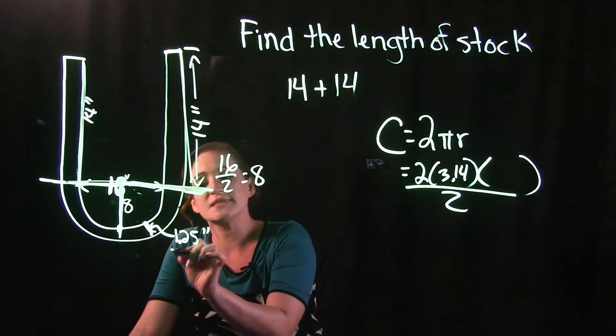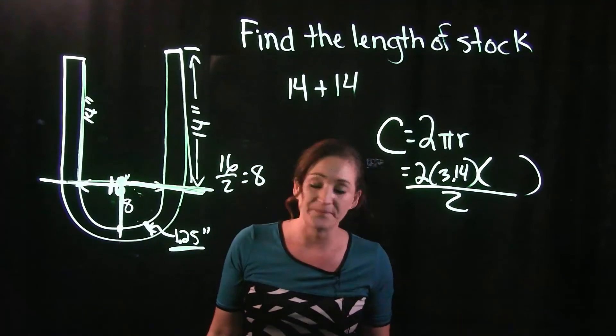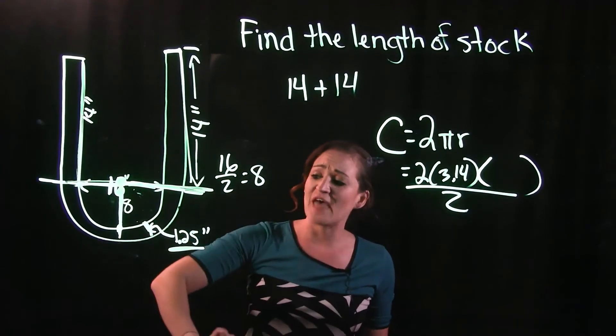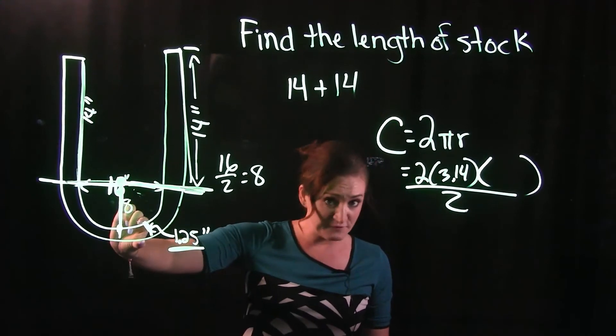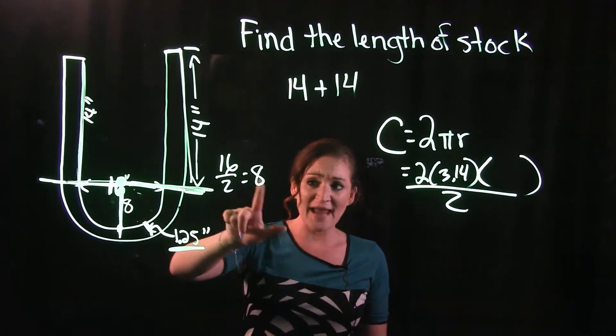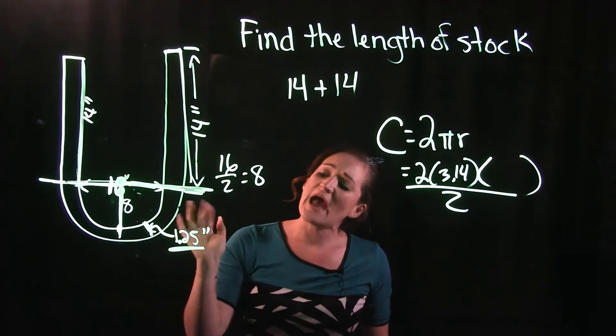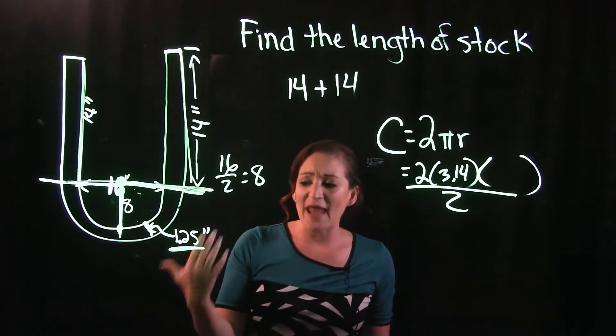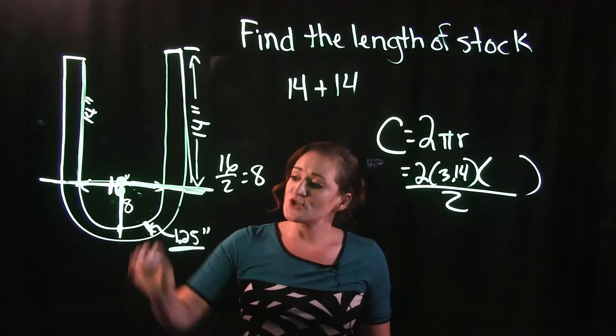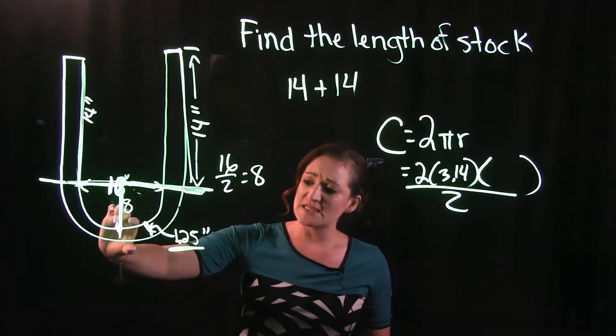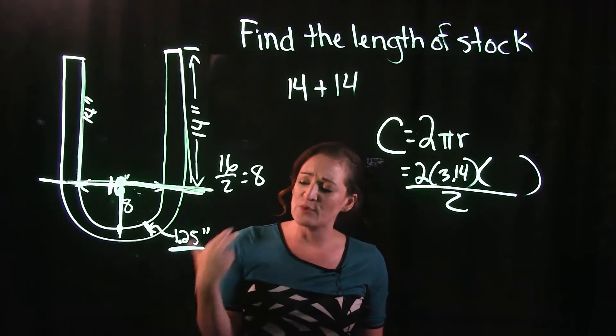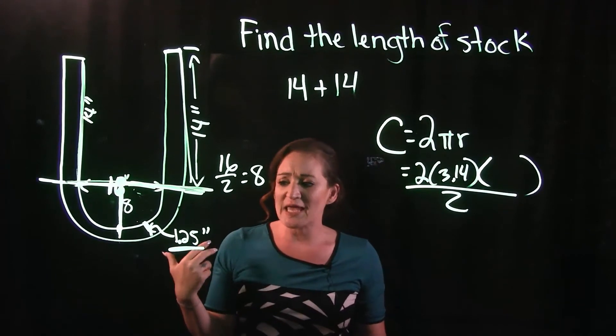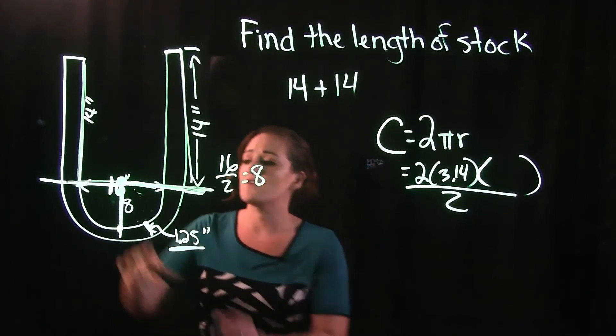We don't want this entire distance across it. That entire distance is this 1.25 there. We only want half of that. So we're going to take half of this thickness and we're going to add it to our radius. If we have 1.25 as the thickness, we want half of that, so half of that thickness is 1.25 divided by 2, which is 0.625.